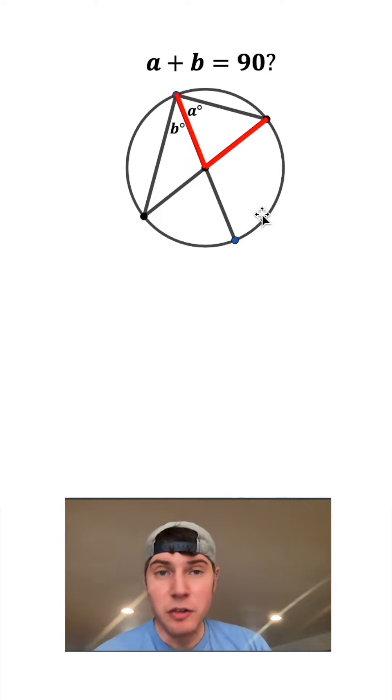Let's take a look at these two segments right here. Each of them are a radius of the circle, which means they're equal to each other. That means that this triangle right here is an isosceles triangle. Anytime you have a triangle with two sides congruent, the angles opposite those sides will also be congruent. So we know this angle right here is also A. Exact same thing is happening over here. This is an isosceles triangle. So we know this angle right here is also B.